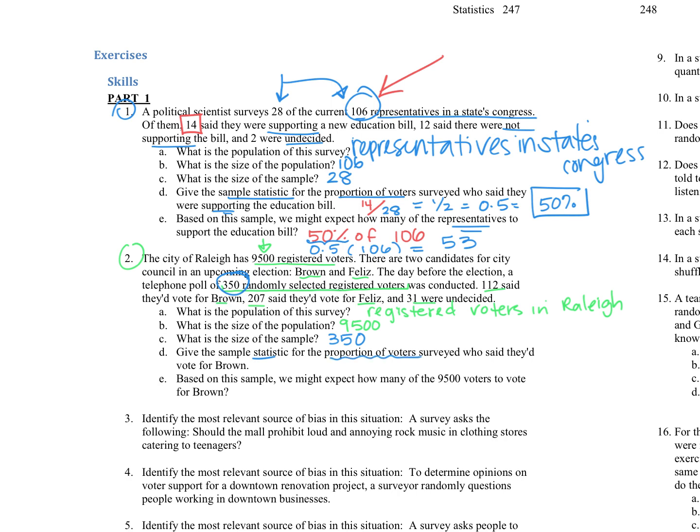So for our stat, for the proportion of voters surveyed who said they would vote for Brown, well, that was, let's see, right here, it said 112 said they would vote for Brown. So we're going to take 112 divided by the sample total, which was 350. And when we divide that 112 divided by 350, we get 32%.